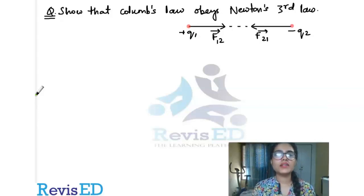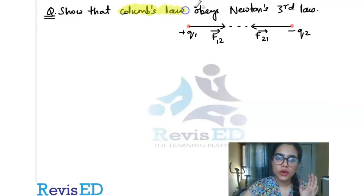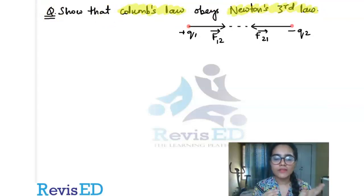The question states: show that Coulomb's law obeys Newton's third law. So we have to show that Coulomb's law obeys Newton's third law. Before knowing this we should know what is Coulomb's law and what is Newton's third law.